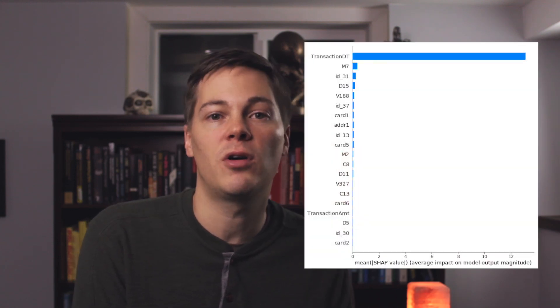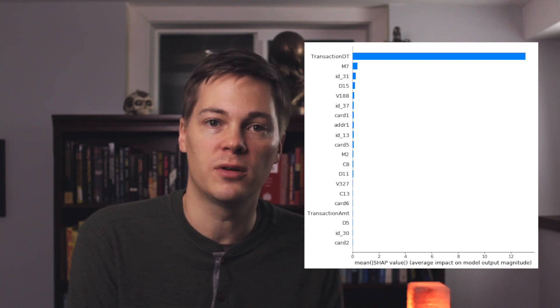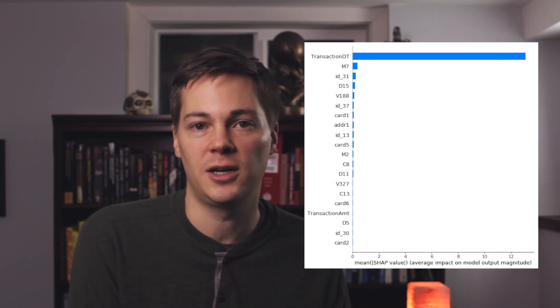As a next step, we can try to understand the adversarial validation model by looking at the feature importances. In this case, the transaction date is by far the most important feature — we know that's important for the model to tell the difference between training and test samples. This makes sense because the training and test samples are essentially defined by using a date to split them. This demonstrates something important: adversarial validation is very effective at communicating both that your training and test sets are very different, shown by the extremely high-quality model, and which variable is mostly responsible — in this case, the transaction date.